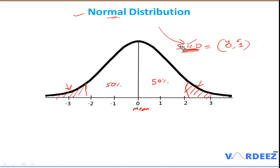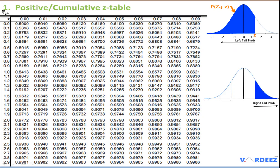Here we have the positive cumulative z-table. In the very first column you see the z-value, and the top row shows the second decimal place of those z-values. All the values in the body of the table are the probabilities associated with these z-values. We call this the positive z-table because the values start from zero and go to the positive side of the distribution.